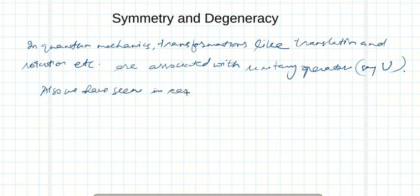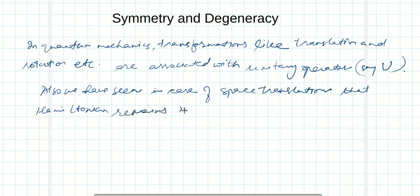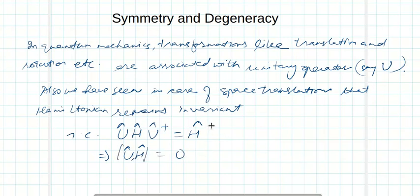As we have seen in the case of space translations, the Hamiltonian remains invariant. That is, U H U dagger equals H, which implies that the commutator [U, H] equals zero. Let me call it equation number 1. From here I can conclude that U H minus H U equals zero, which means U H equals H U.